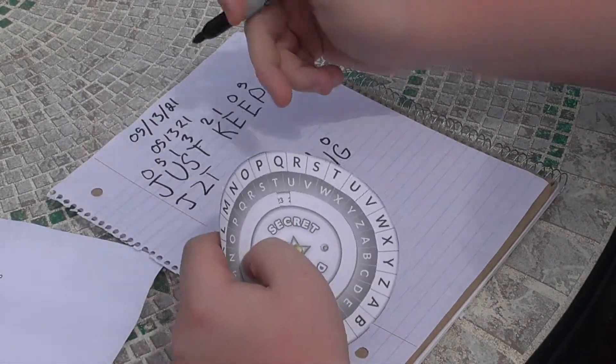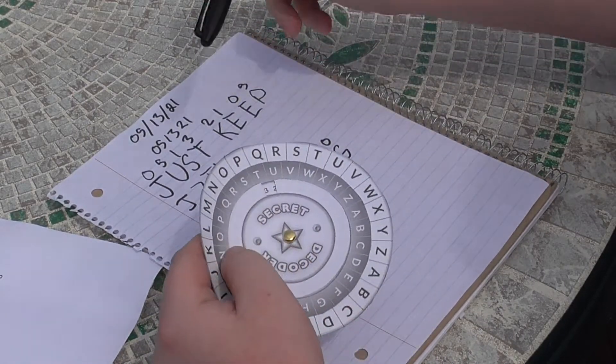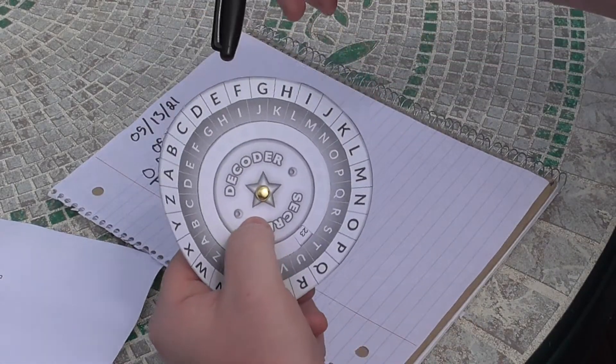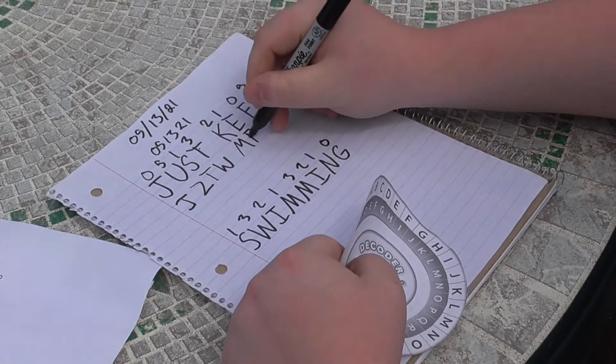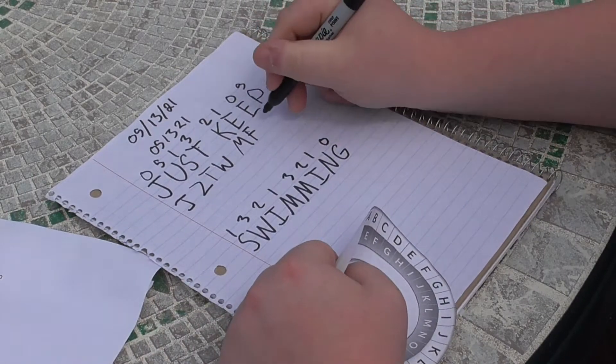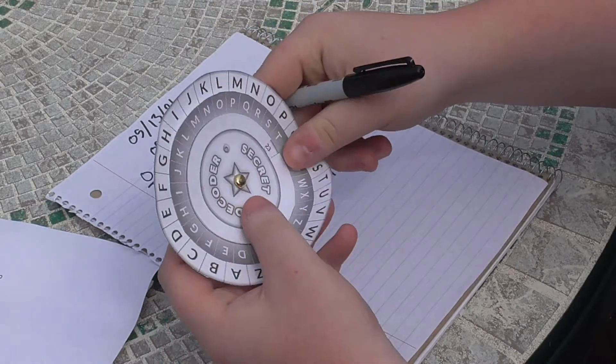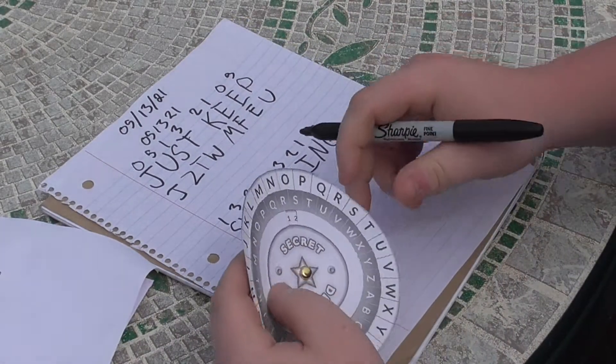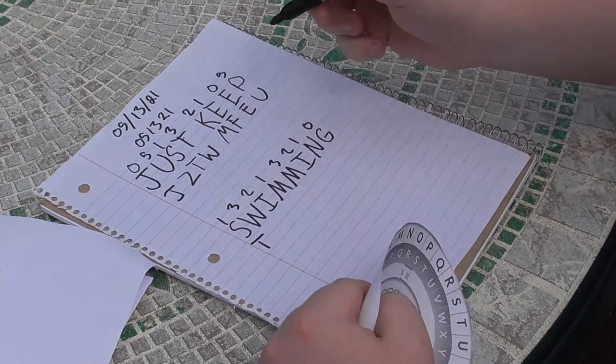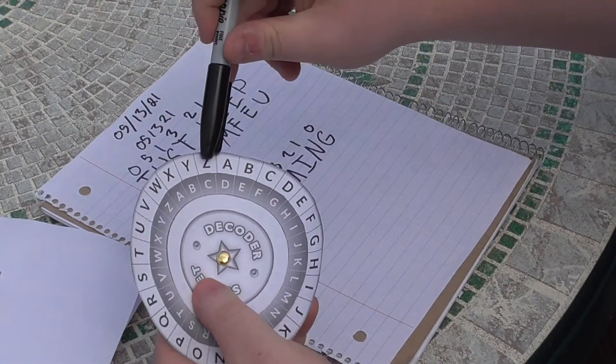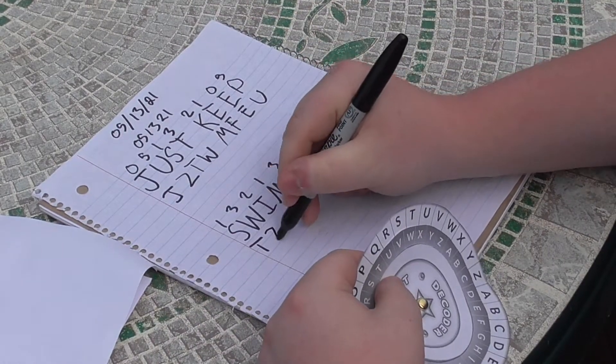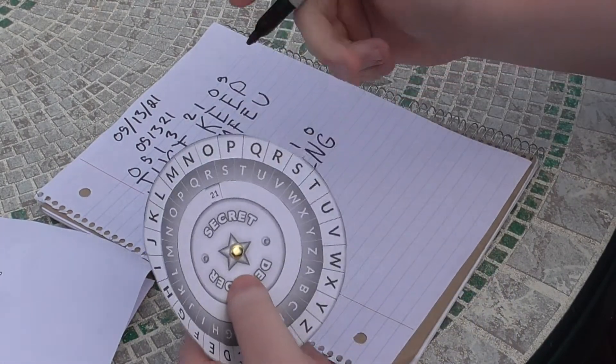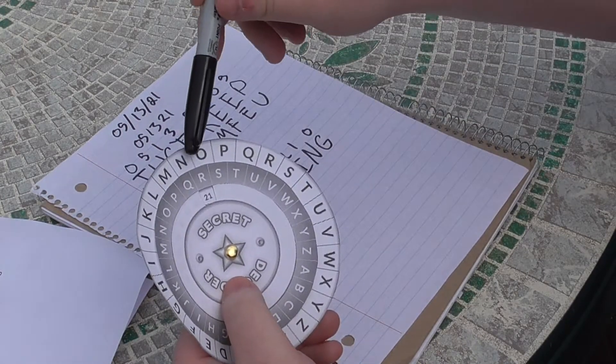T is three—1, 2, 3—W. Two from K is M. One from E is F. Zero from E is also E. Five from P—1, 2, 3, 4, 5—is U. One from S is T. One from S is T. Three from W—1, 2, 3—Z. Two from I is K. One from M is N. Three from M is—1, 2, 3—P.